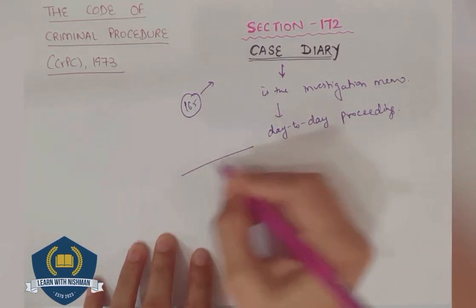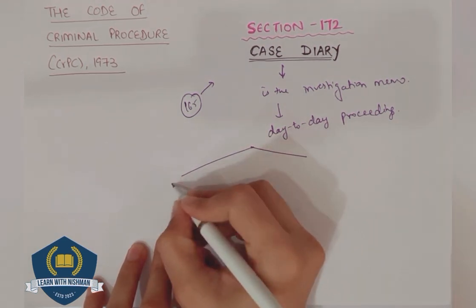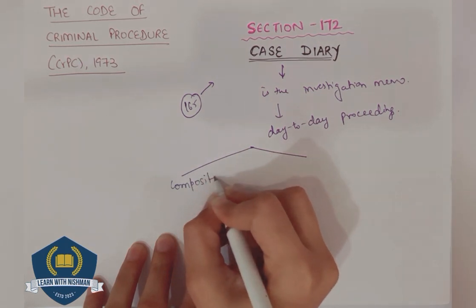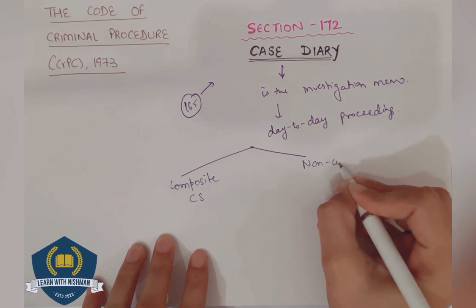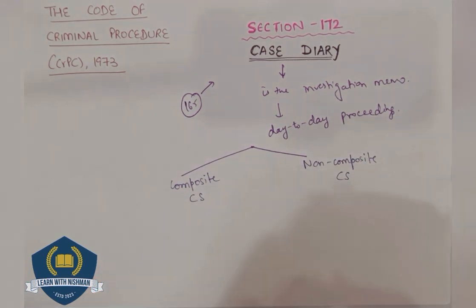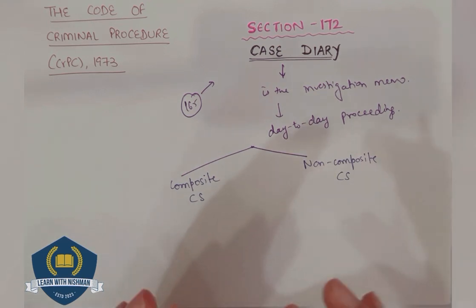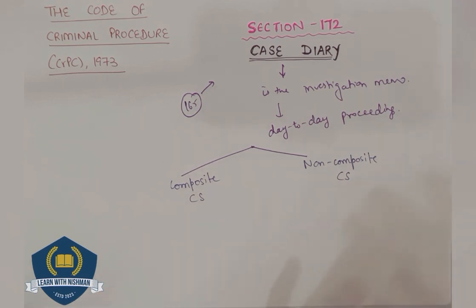The Case Diary is divided into two parts. The first is the Composite Case Diary and the other is the Non-Composite Case Diary. In the Composite Case Diary, pages are provided at the end on which statements of witnesses can be written in detail, while a summary is written at the front and the full detail is at the end.